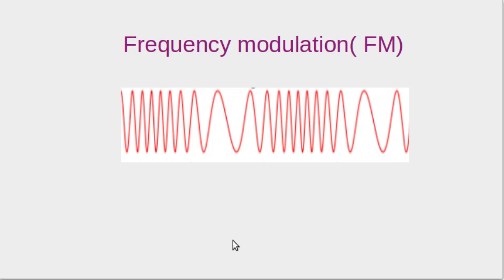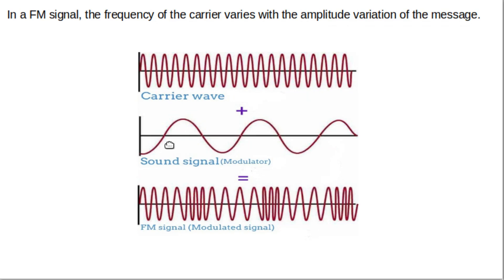Today we will discuss a modulation technique called frequency modulation or FM. Modulation is the process of adding a message signal into a high frequency carrier, and FM is one such technique. In amplitude modulation or AM, we add the message signal into the amplitude of the carrier, but in FM we add the message signal into the frequency of the carrier.